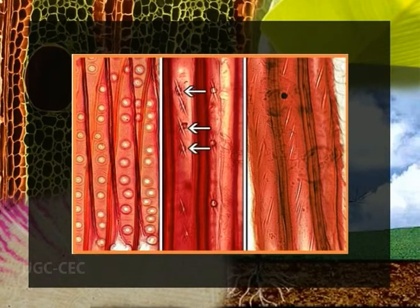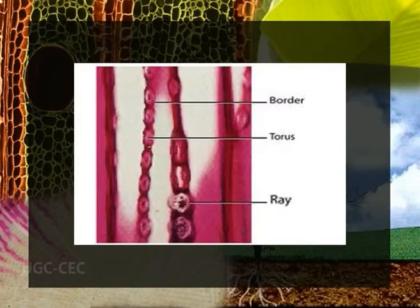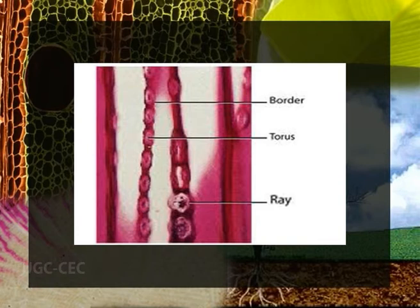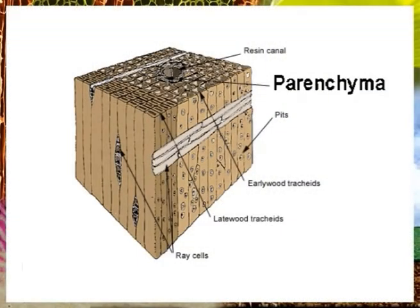Another feature of gymnosperm wood is the occurrence of trabeculae in the tracheids. Trabeculae are rod-shaped outgrowths of the tangential cell walls which grow across the cell lumen so as to contact the opposite tangential walls. Rays in gymnosperms may comprise parenchyma only — homocellular rays — or parenchyma and tracheids — heterocellular rays. The ray tracheids are distinguished from ray parenchyma by the presence of bordered pits and absence of protoplasts. In the large majority of gymnosperms, rays are uniserate and usually from 1 to 60 cells high. If a resin duct passes through the center of the ray, it is known as a resiniferous ray.